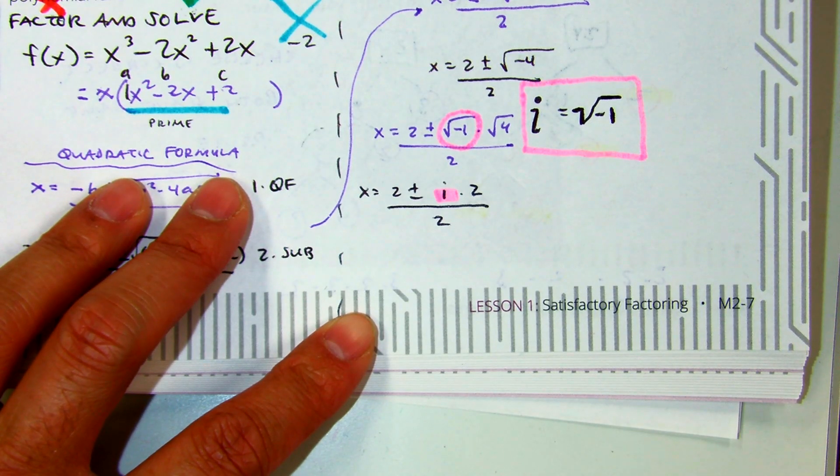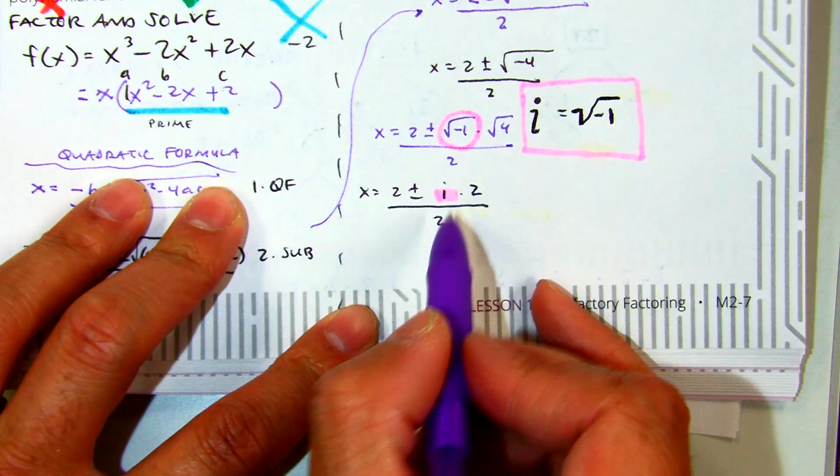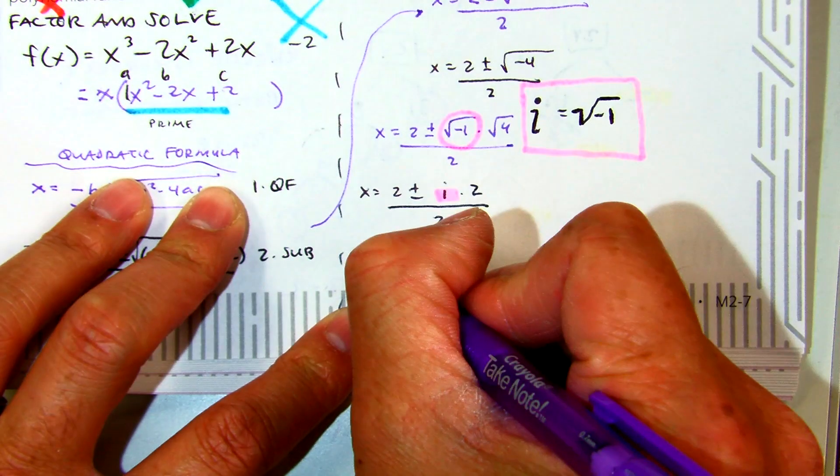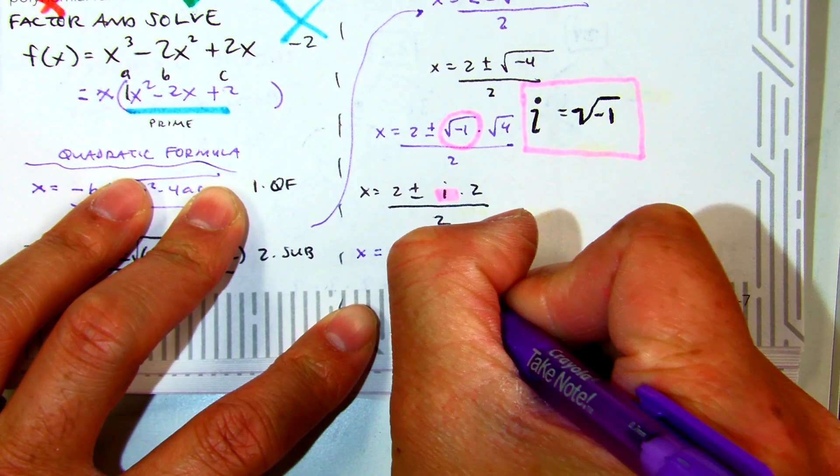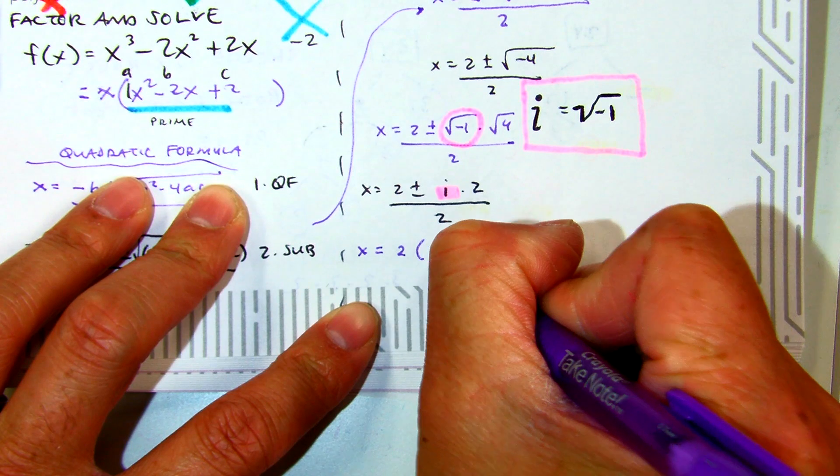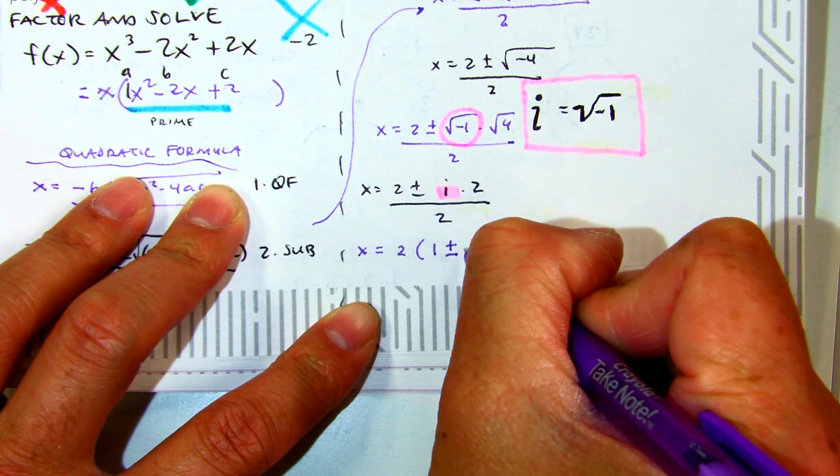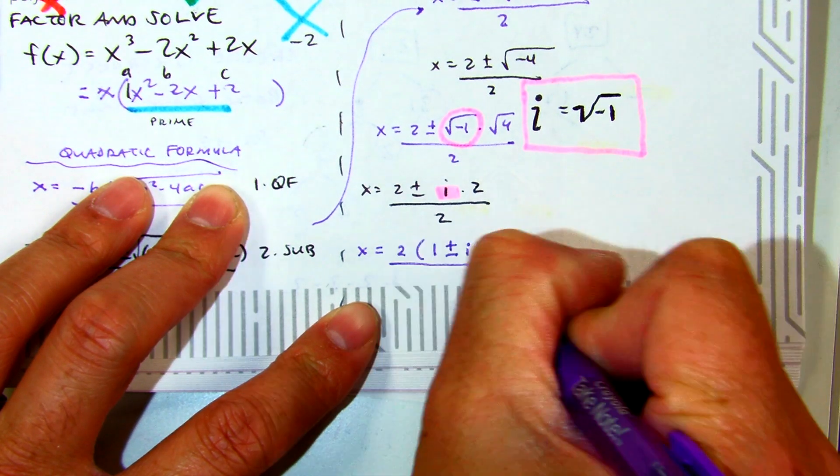Almost done. I notice they all have 2, so I'm going to factor out a greatest common factor of 2. So I have 1 plus or minus i, all over 2 times 1.